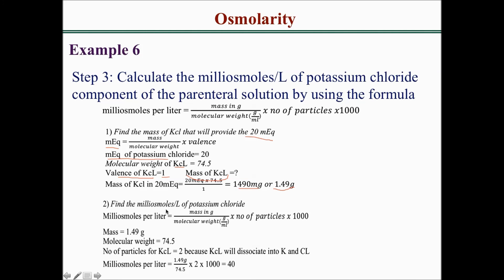Our next step is to find the milliosmol per liter of KCl using the formula: mass in grams divided by molecular weight times number of particles times 1,000. Mass is 1.49 grams, molecular weight is 74.5, and KCl dissociates into 2 particles. Plugging in: 1.49 divided by 74.5, times 2, times 1,000 equals 40 milliosmol per liter. So 20 milliequivalents of KCl provides 40 milliosmol per liter.